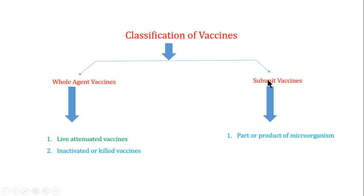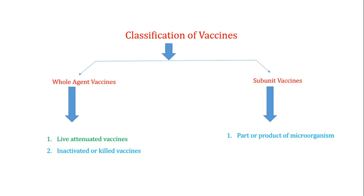In the subunit vaccine, as the name indicates, we are talking about a subunit — a part or the product of the pathogenic organism that is utilized as a vaccine. We discussed about the live attenuated vaccines in the previous video, and in this particular video we are going to talk about the inactivated or killed vaccines.